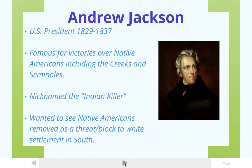It all begins with a guy named Andrew Jackson. He was the general that went into Florida and killed Arbuthnot and Ambruster without them really doing anything wrong, which was a big controversy. He eventually gets elected president, famous for his victories over the Seminoles, the Creeks, and the British in the War of 1812.